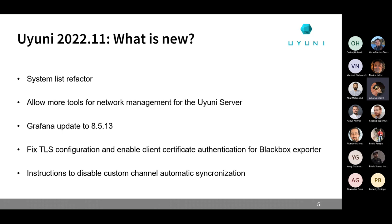The system list UI is now refactored. If you want all the details about the refactor, Cedric did a very nice presentation in September about it — you can go to the YouTube channel and have a look there. The biggest improvement you will see is in performance, in terms of how much time it takes to load the list. This refactor will also allow several further improvements in the next releases. There is a cache table that is used to show the data to you.